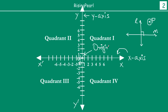So this is our origin. Then we also see that once you draw two perpendicular lines, it divides the plane into four quadrants: Quadrant one, Quadrant two, Quadrant three, and Quadrant four.